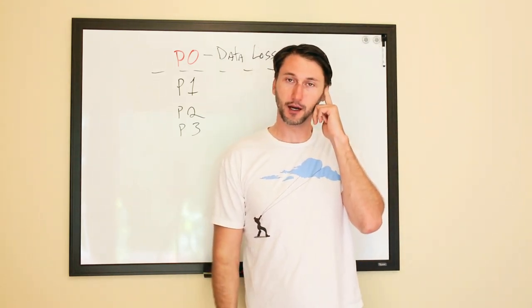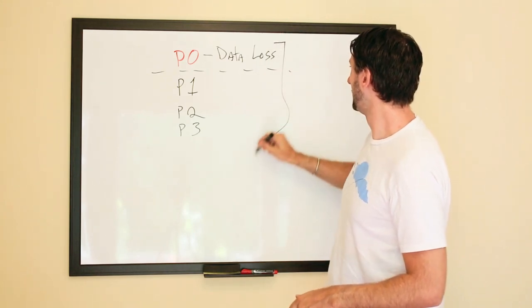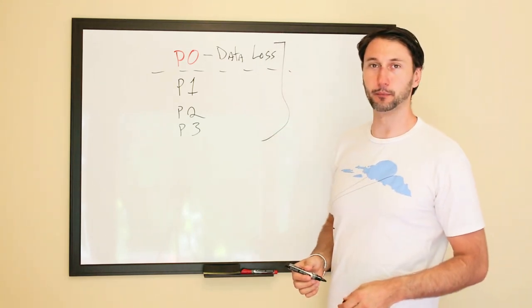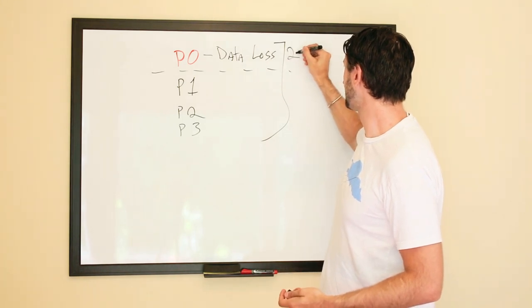This is where your team needs to define what kind of SLA would be around that. My assumption is that if it is a P0,